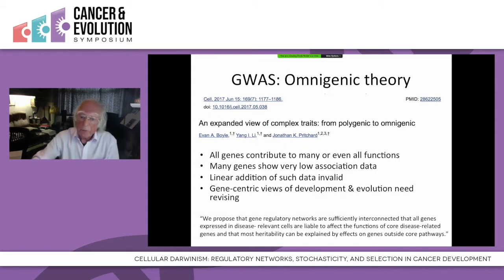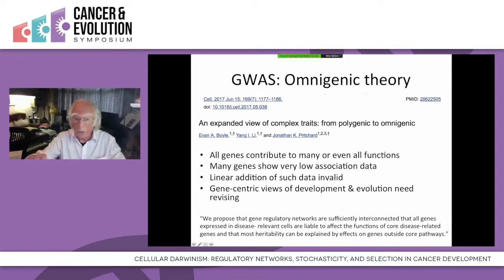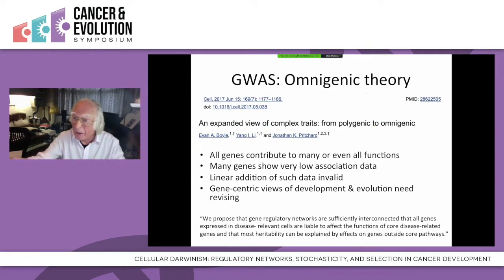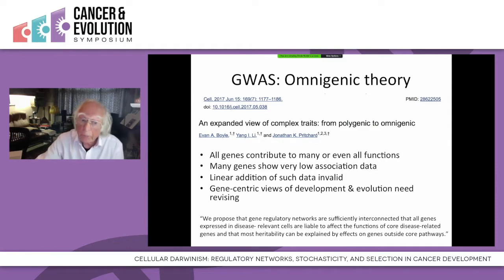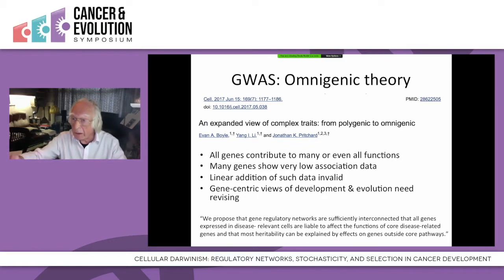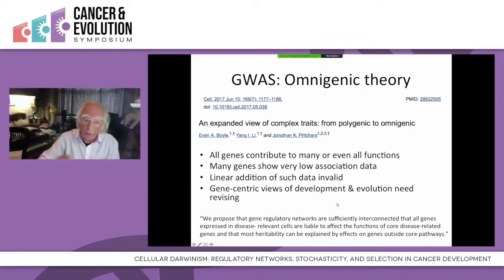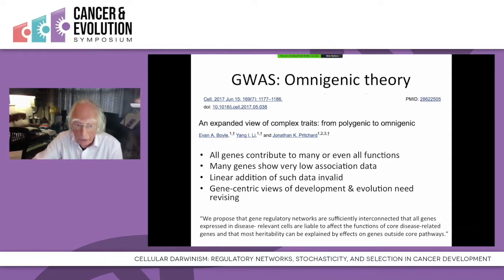This means two important things. First, linear addition of low association scores from genome-wide association studies won't work, because linear addition doesn't apply in that kind of situation. If the logic is A plus B gives C, you won't have C if either A or B are absent — you can't add the two associations together. Second, this means that gene-centric views of development and evolution need revising.